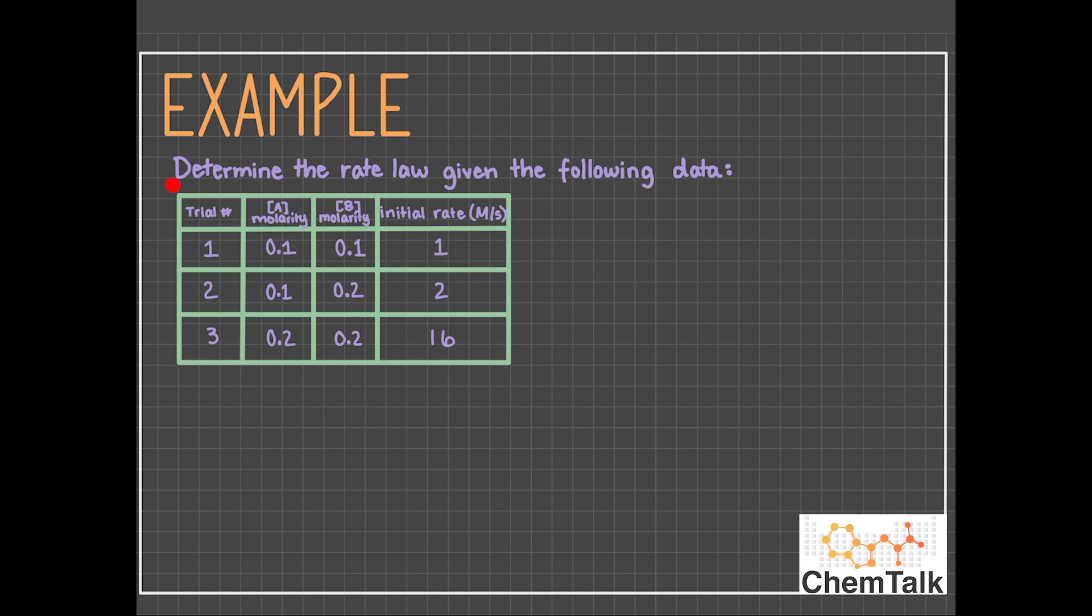Now let's take a look at an example to better understand the topics we just discussed. Determine the rate law given the following data. So in this table, we have a certain concentration of each reactant and an initial rate for each trial.